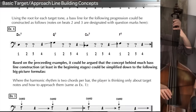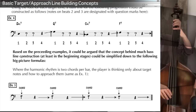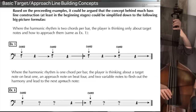Using the root note for each target note, a bass line could be constructed with a target on beat 1, an approach note on beat 4, and question marks on beats 2 and 3. What's interesting is that a bass player could play a lot of different things on beats 2 and 3 and still have the basic function of the line remain intact. Based on the preceding examples, the concept behind much bass line construction could be simplified to: where the harmonic rhythm is two chords per bar, it's target–approach, target–approach — the player just has to execute and know how to approach target notes.